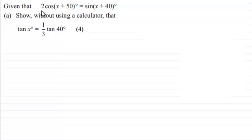We're given that 2 cos of x plus 50 degrees is equal to the sine of x plus 40 degrees. And we've got to show that without using a calculator that tan x degrees is equal to one third of tan of 40 degrees for four marks.